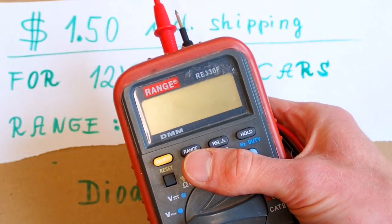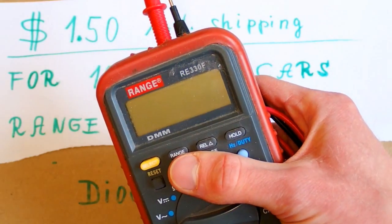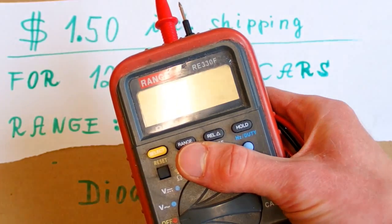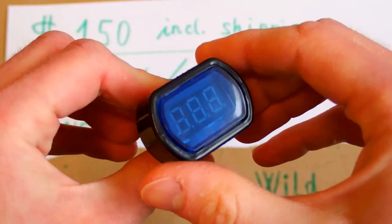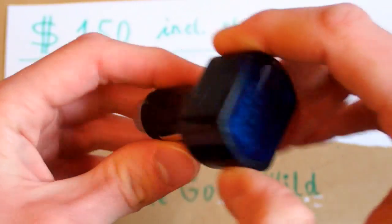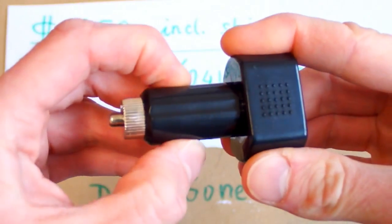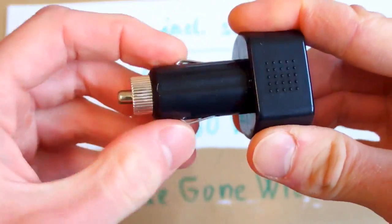With a classic multimeter you would have to open your car engine cover or hood or bonnet and measure the voltage directly on the battery. With this device it's much easier because you just stick it into your car cigarette lighter socket and measure the voltage directly.